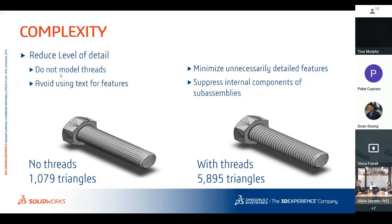Other recommendations: do not model threads, avoid using text as features, minimize unnecessarily detailed features, and suppress internal components. You can have a simplified configuration for use in upper-level assemblies. A lot of McMaster parts come in at the highest image quality just to look nice — we'll talk about turning that down. You can have a detailed configuration for your own reference and a simplified one for assembly use.